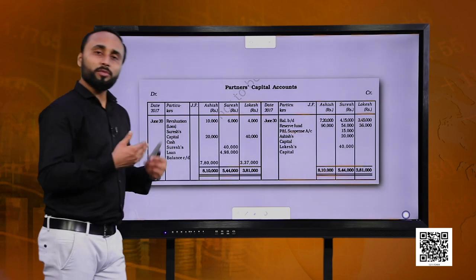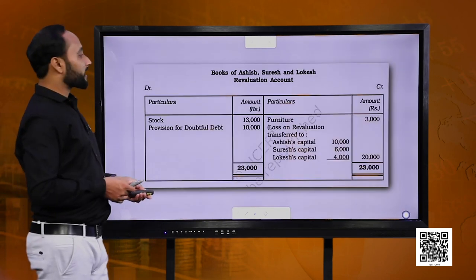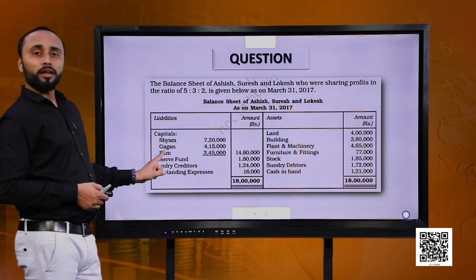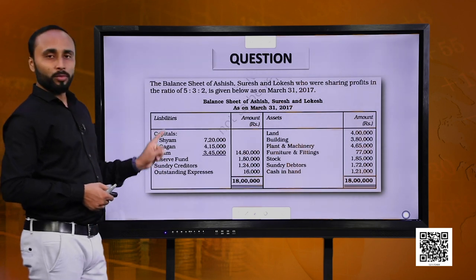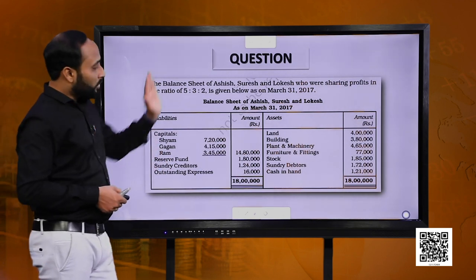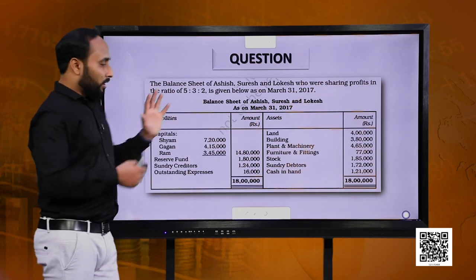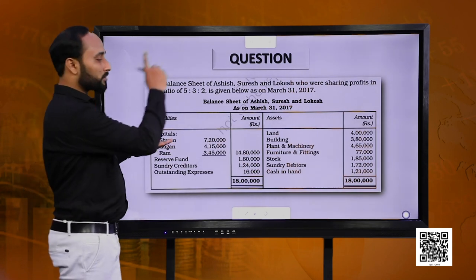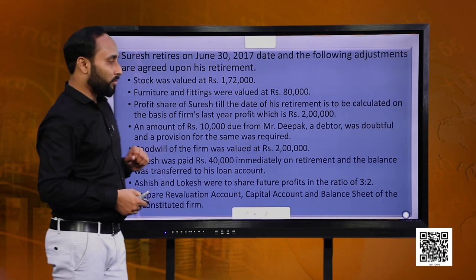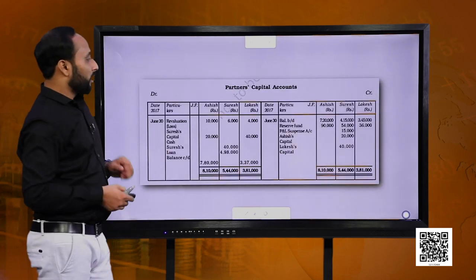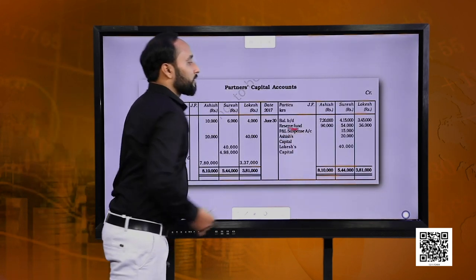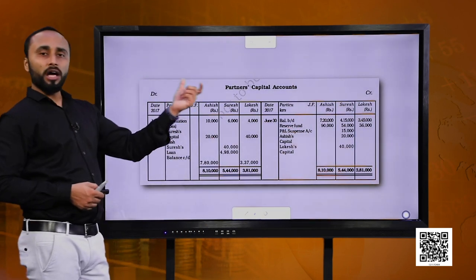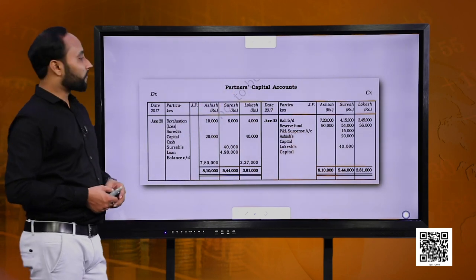Next, distribute whatever reserves or accumulated profits or losses we have. In this balance sheet we had one reserve fund of 1,80,000. This reserve will go to the credit side of the partners' capital accounts. You can remember this with a cross perspective — if the reserve is on the liability side, it goes to the credit side of the partners' capital accounts. The total reserve fund of 1,80,000 is now distributed to the partners in their old ratio of 5:3:2.